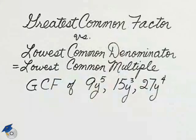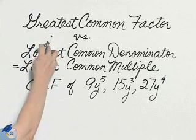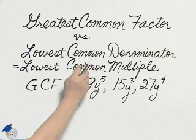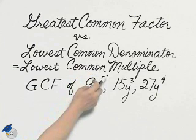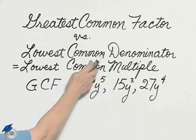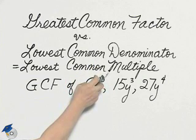The greatest common factor is not the same thing as the lowest common denominator or the lowest common multiple. A denominator and a multiple have to be large enough to encompass them all.